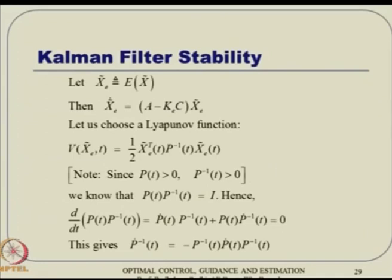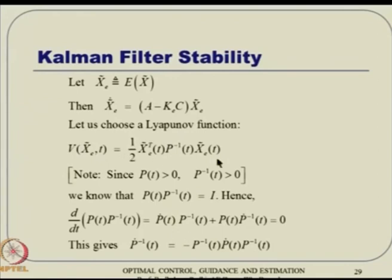This global uniform asymptotic stability is a strong result: it does not matter when you start or what initial P_0 you choose — everything will eventually converge. That completes the generalization of the Kalman Filter from LTI to LTV systems in continuous time. Now, since we need to incorporate discrete measurement equations, we move to the discrete time Kalman Filter. The system dynamics can be discretized from a continuous model, while sensor outputs are naturally discrete.